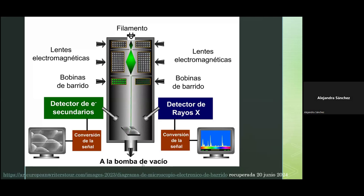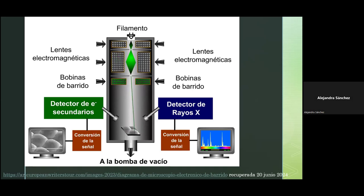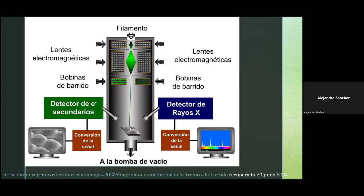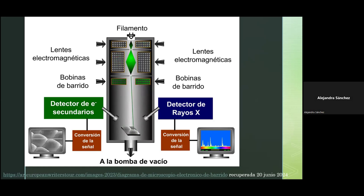Algo importante: el microscopio electrónico, tanto de barrido como de transmisión, trabaja a alto vacío. Este vacío extrae el aire de la columna para que el haz de electrones tenga camino libre. Sin alto vacío, la contaminación ambiental perjudicaría al haz de electrones, impidiendo que llegue a la muestra y que se obtengan las imágenes deseadas.